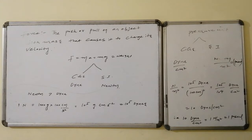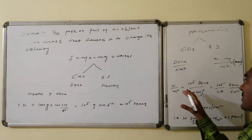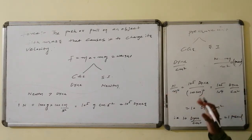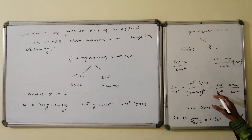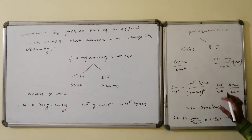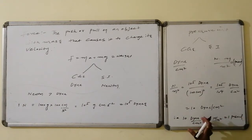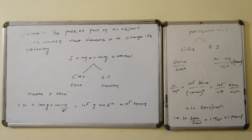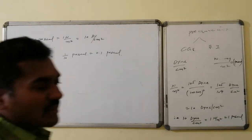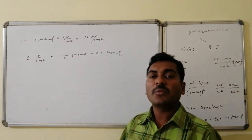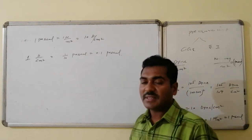One newton in CGS units: 1 newton = 1 kg × 1 m/s² = 1000 g × 100 cm/s² = 10³ × 10² = 10⁵ g·cm/s², which is 10⁵ dynes. So 1 newton = 10⁵ dynes. For pressure: 1 newton per meter square = 10⁵ dynes / 10⁴ cm² = 10 dynes per centimeter square. Thus 1 pascal = 1 N/m² = 10 dynes per cm². Conversely, 1 dyne per cm² = 0.1 pascal.